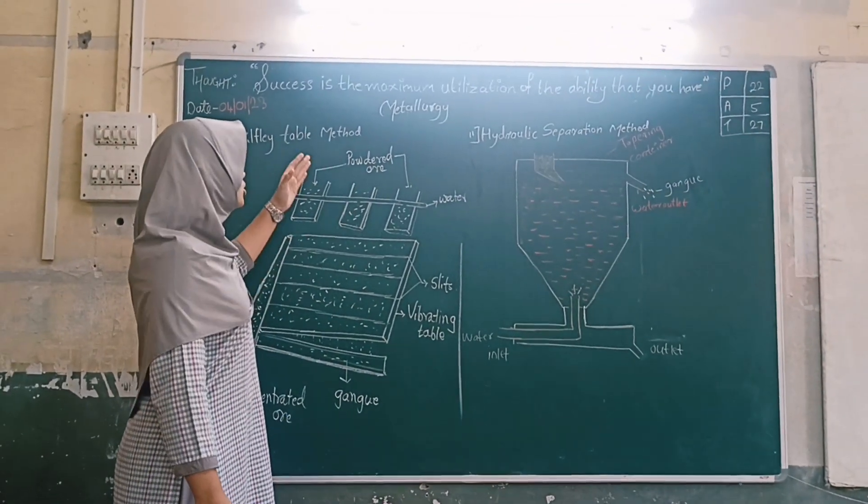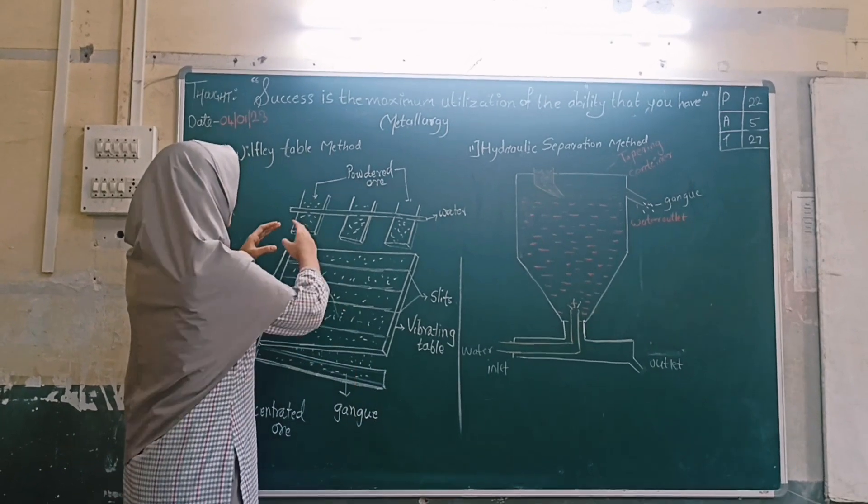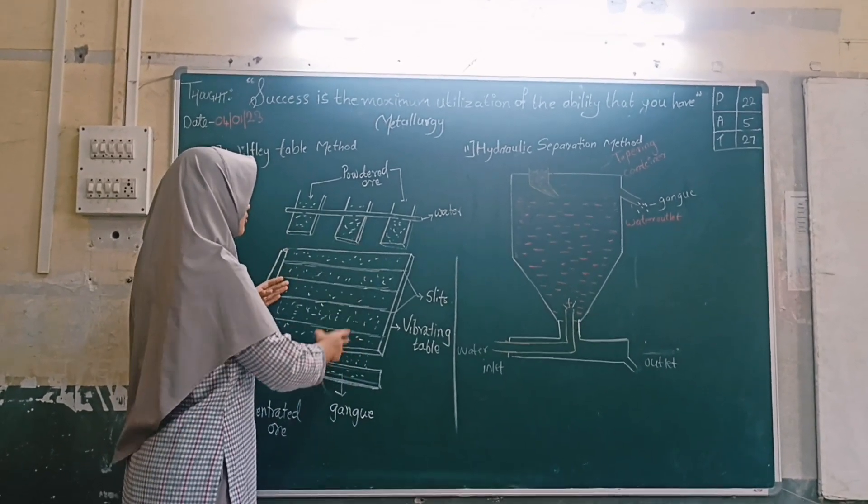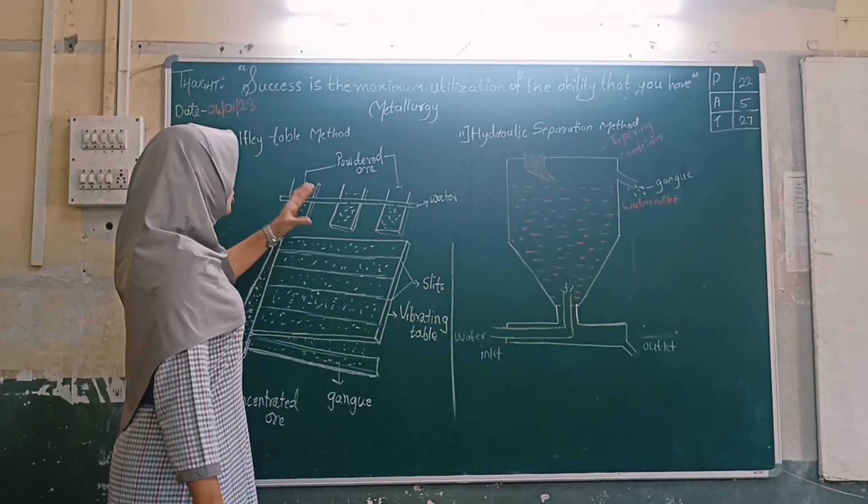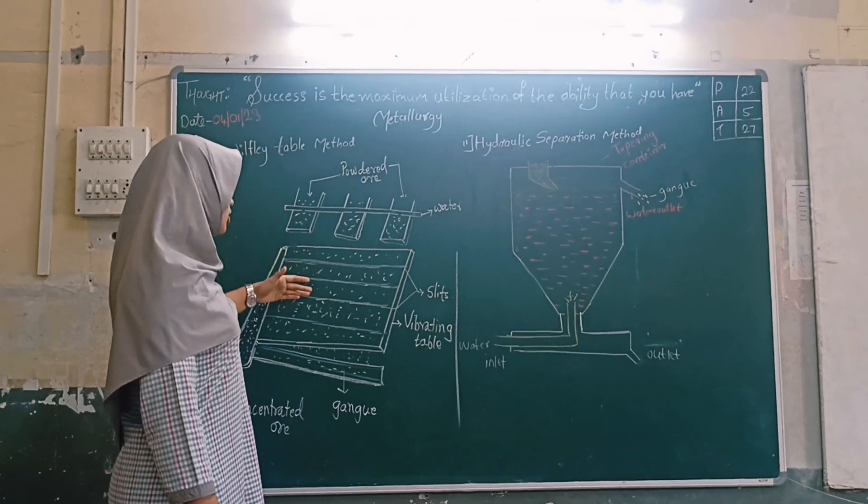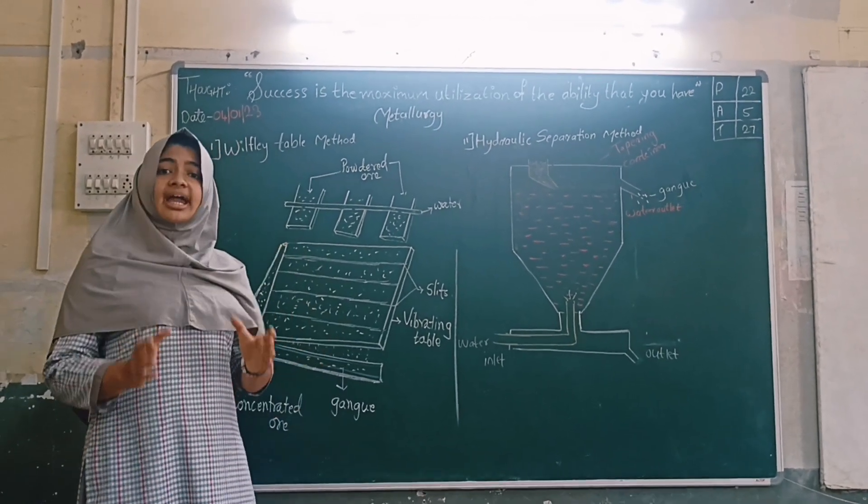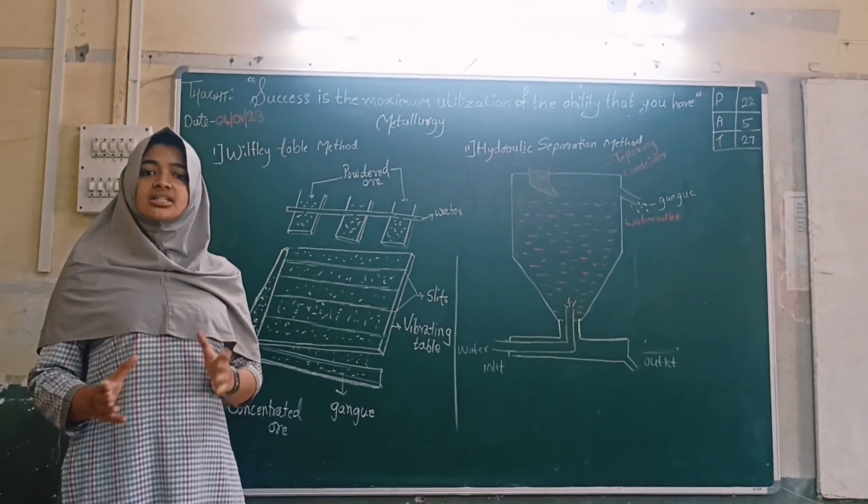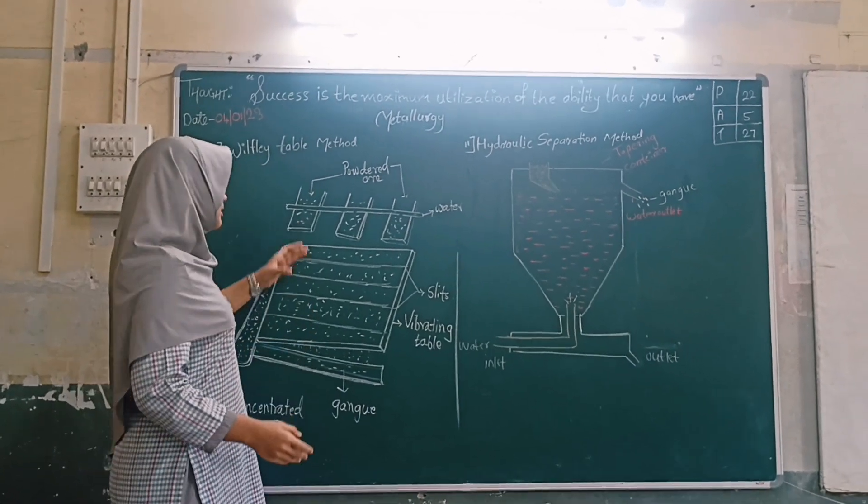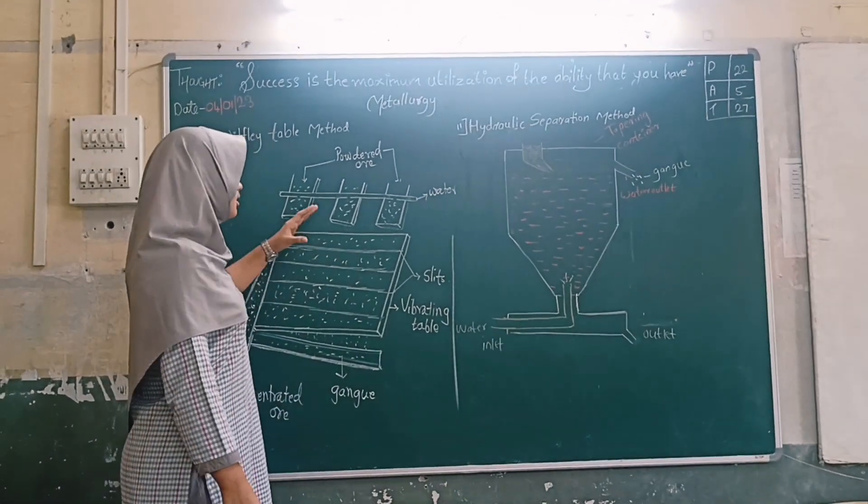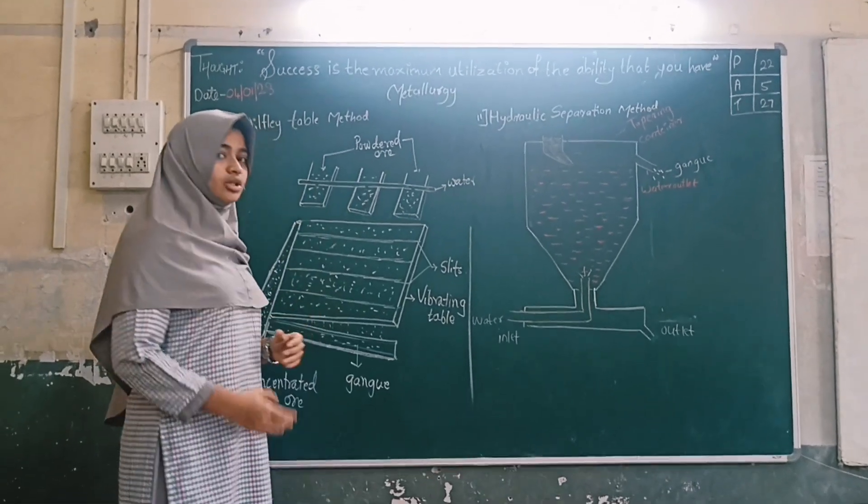From this container we will put powder ore. And from here the water will flow. So powder ore will flow off with the water. The gangue is lighter particles and metal is heavier. So the metal particles will get collected in the slit, and gangue particles will flow off with the water.